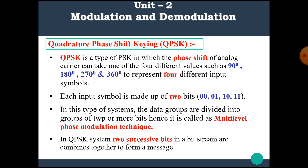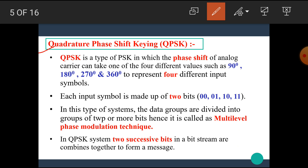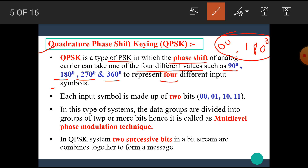Now we are going to see the next type: Quadrature Phase Shift Keying or QPSK. QPSK is a type of phase shift keying in which the phase shift of the analog carrier can take one of four different values — 90 degree, 180 degree, 270 degree, and 360 degree — to represent four different input symbols. Each input symbol is made up of two bits: 00, 01, 10, and 11.